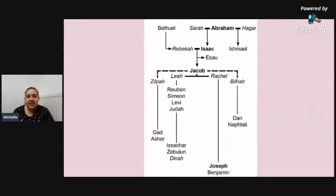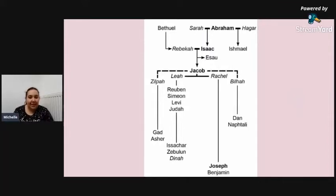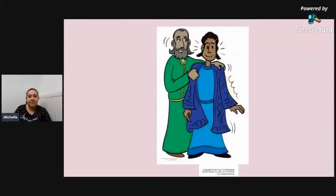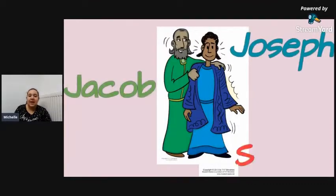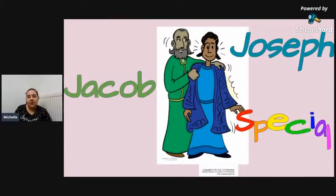Joseph's dad was called Jacob, and Jacob's dad was Isaac — so Joseph's granddad. And then Joseph's great-grandfather was Abraham. This is Joseph and his father Jacob, and the story of his special coat.